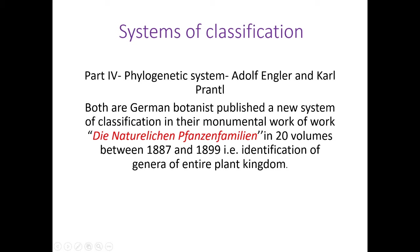The phylogenetic system was proposed by Adolf Engler and Karl Prantl. Both are German botanists who published a new system of classification in their monumental work, a book entitled 'Die Natürlichen Pflanzenfamilien'. They published a total of 23 volumes between the period 1887 and 1898. The meaning of this book is the identification of genera of the entire plant kingdom.